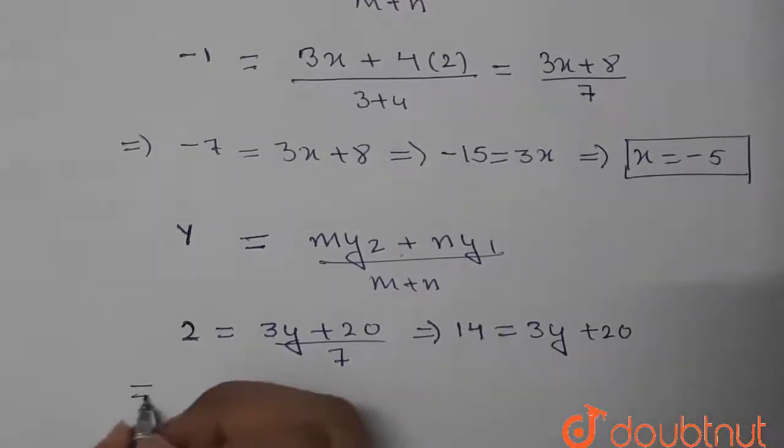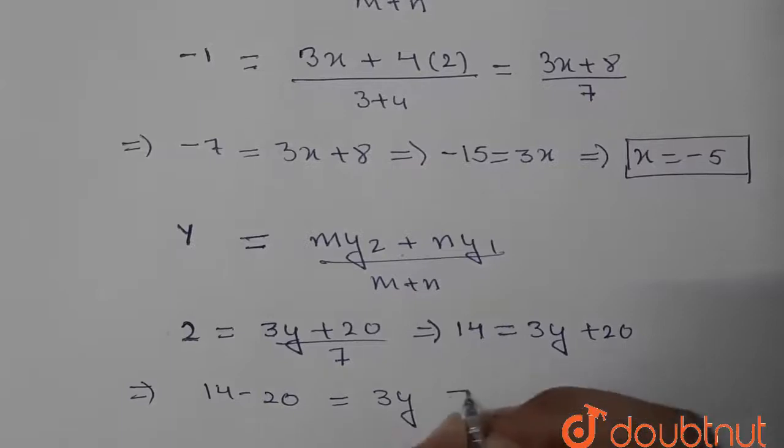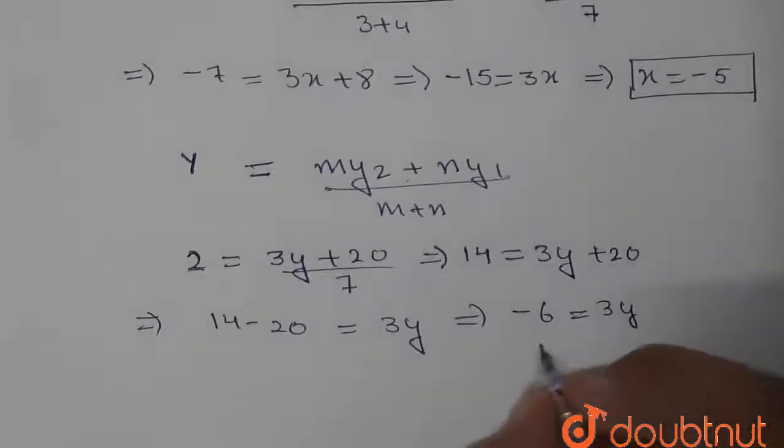Now this 20 will go here, so 14 - 20 = 3y, which is -6 = 3y. Finally, the value for y will come equal to -2.